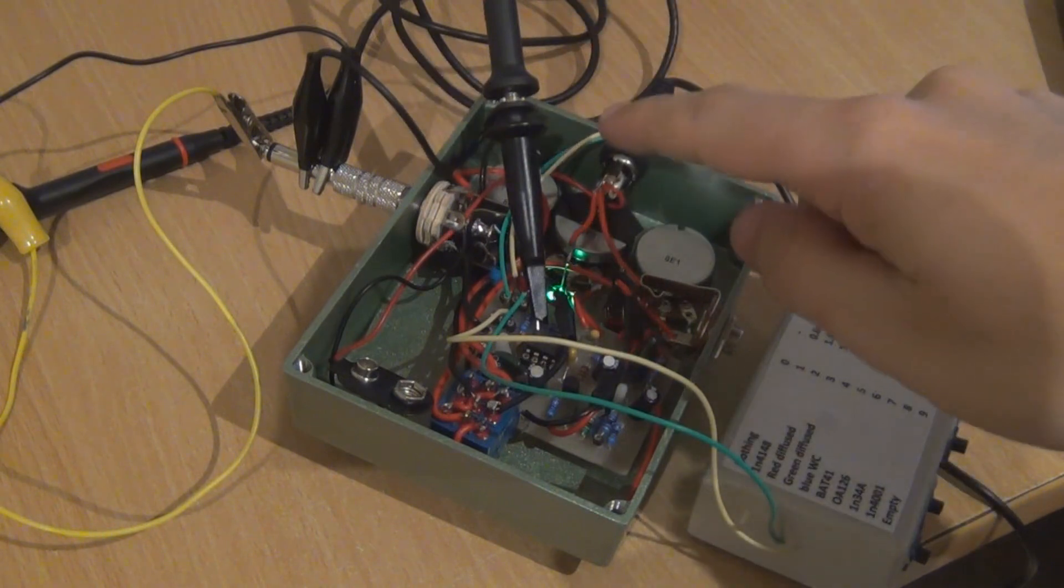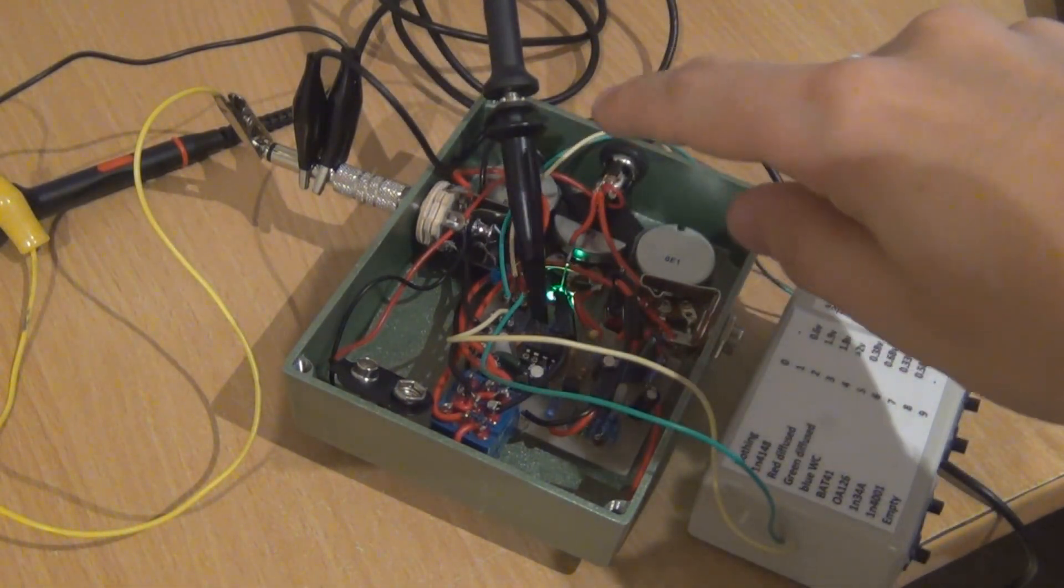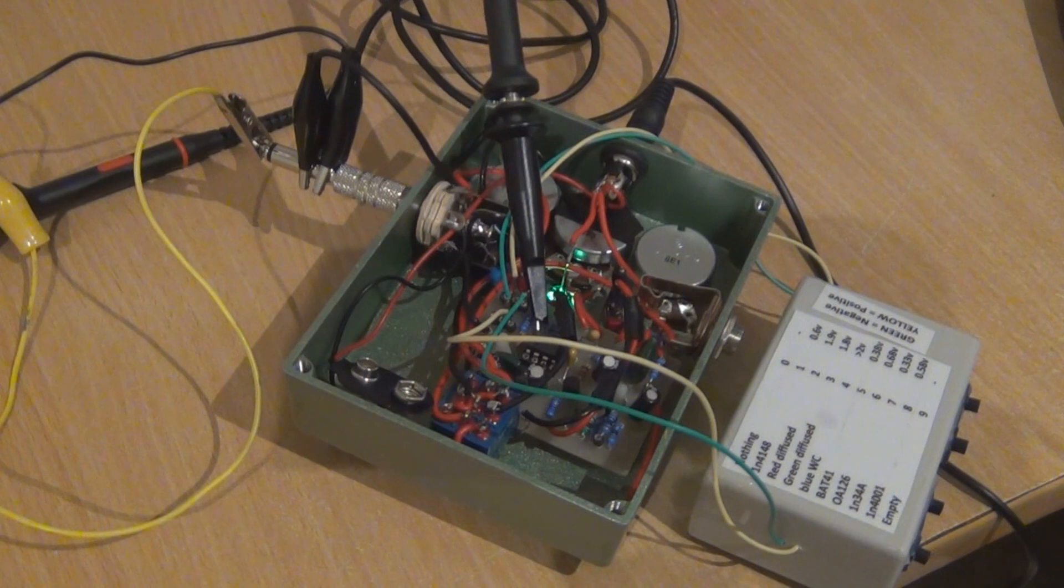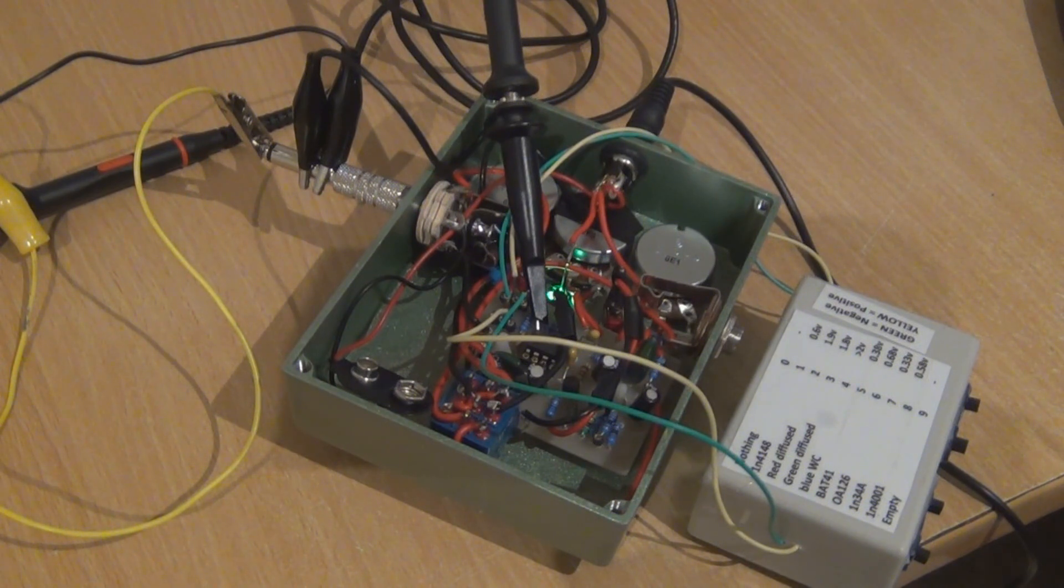I've got this probe connected to the 1K resistor on the output of the first stage of the tube screamer before it hits the output buffer. It's the best way to see what's going on before it goes into any of the tone controls or other shaping circuitry on the output.